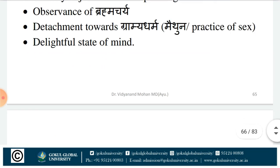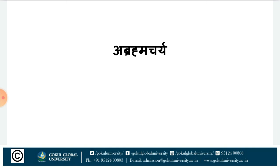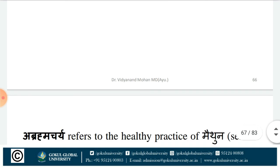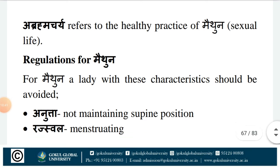With this, the second Tropastambha — Nidra — is concluded. The third Tropastambha is Brahmacharya according to Charaka and Susruta, while Vagbhata calls it Abrahamacharya. Brahmacharya involves Maithuna karma in a regulated way. According to modern science also, it has benefits for the circulatory system. In Kali Yuga people's mind control is not as strong as in Krita Yuga or Dvapara Yuga, which is why Vagbhata supports the view of Abrahamacharya. Abrahamacharya refers to healthy practice of Maithuna — that is, regulated sexual life.